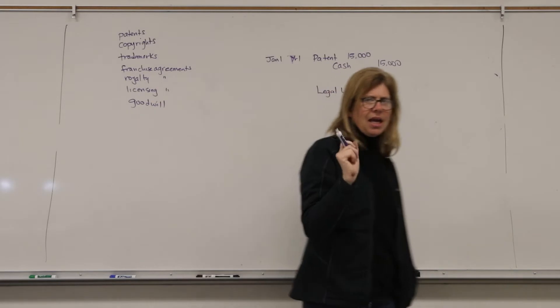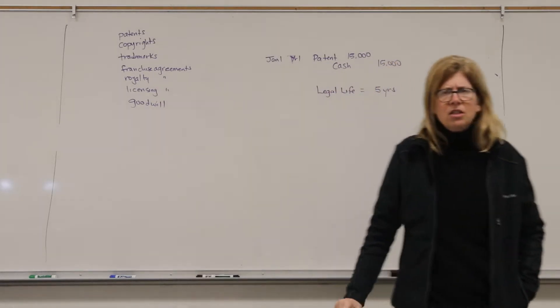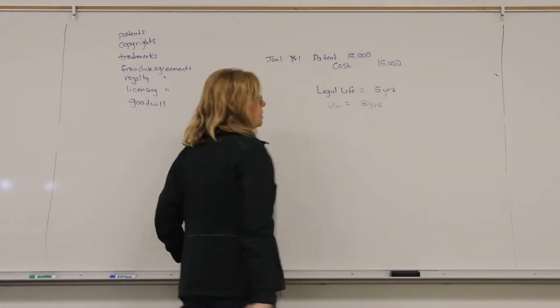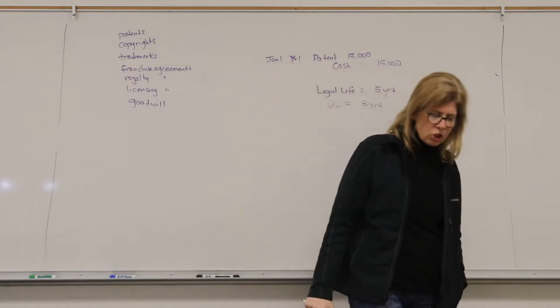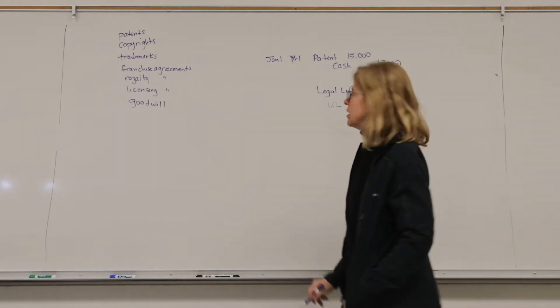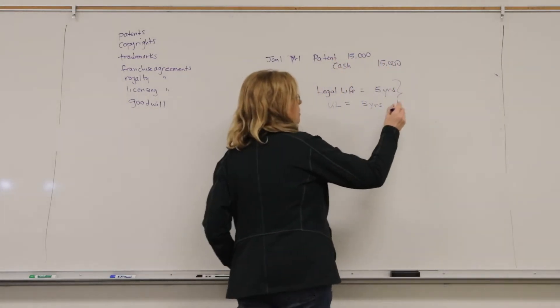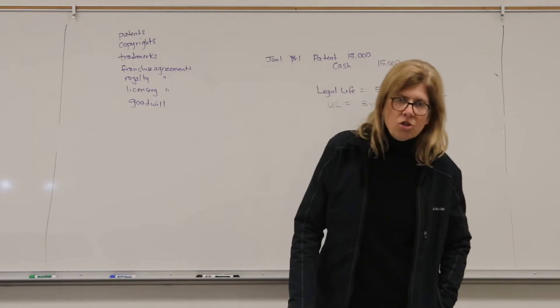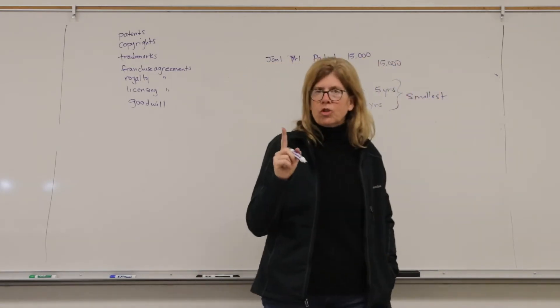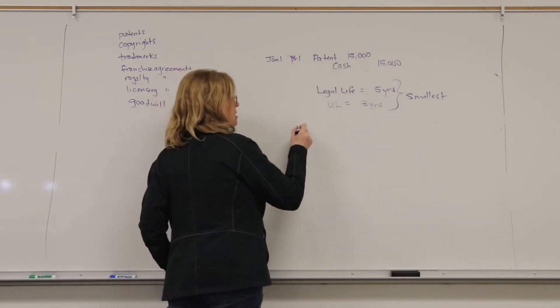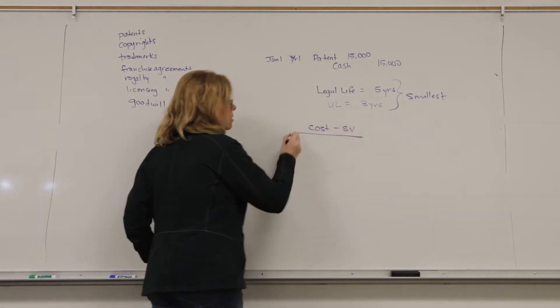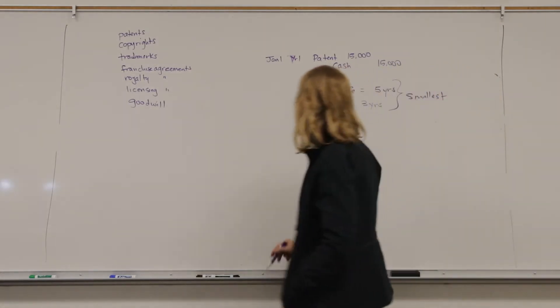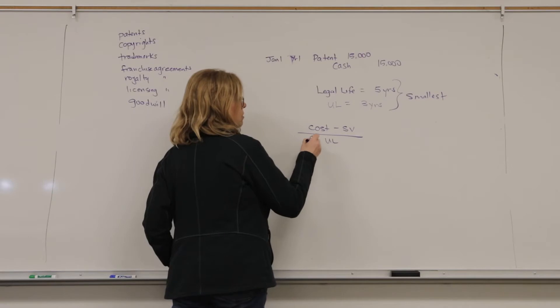When I get this patent, I ask myself, what is the legal life associated with it? And let's say that it's five years. And then I ask myself, can I use this? Will this benefit me for five years? And let's assume it won't. Let's assume that the useful life that I plan on using it for is three years. And I plan on selling it to somebody else after that for the remaining two. When I compare legal life to how long I'll use it, we a lot of times come up with two numbers. You take the smallest to be your useful life.